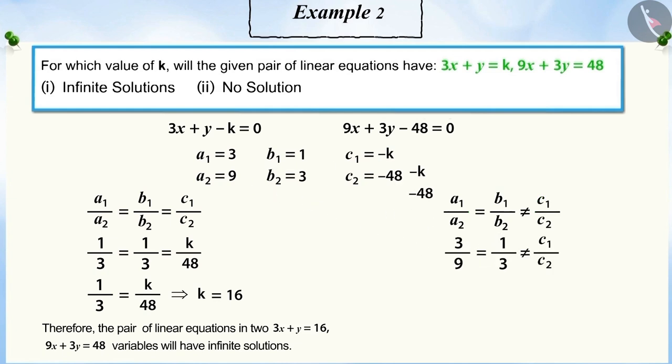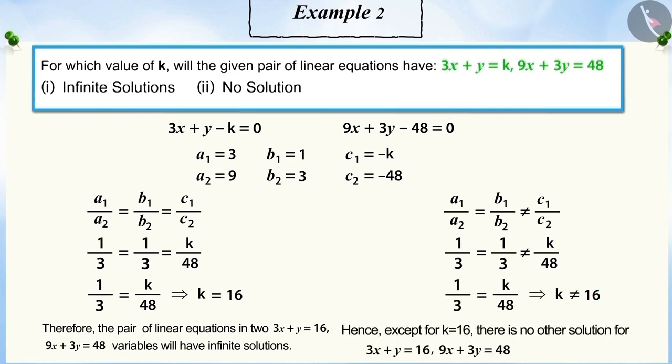Replacing all the values of the coefficients and constants and on solving this, we get k is not equal to 16. Hence, except for k is equal to 16, there is no other solution for the given pair of linear equations.